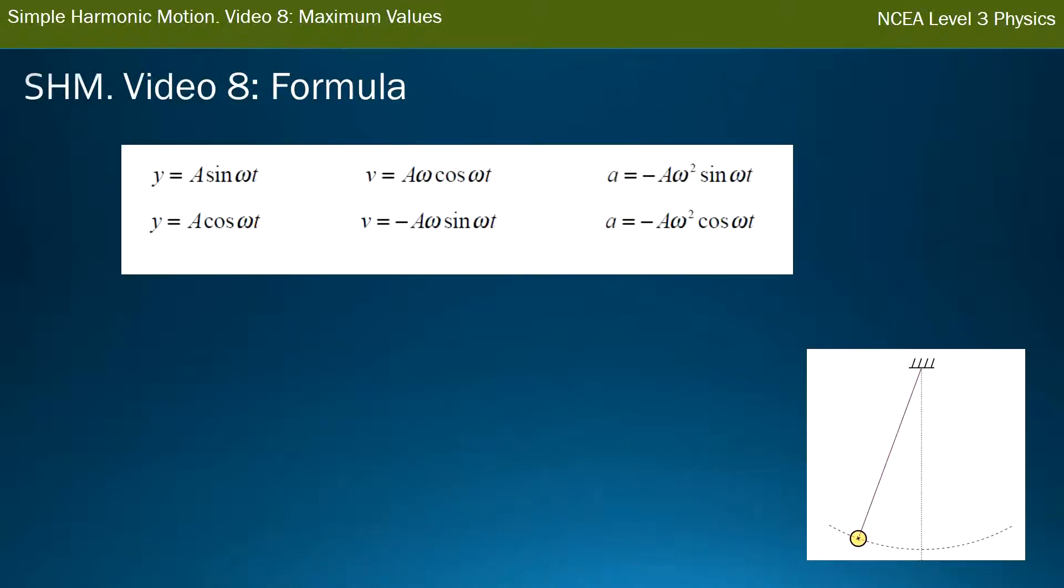So if that's the largest value you can get out, sine omega t is 1, then 1 times a, the largest value you can get for the displacement is the amplitude, which is the definition of the amplitude in the first place. The amplitude is the maximum displacement.